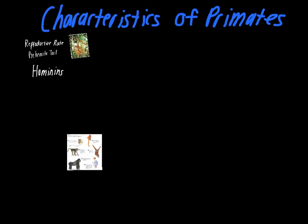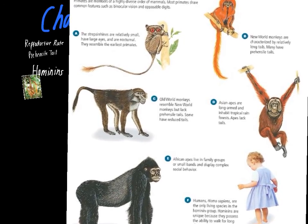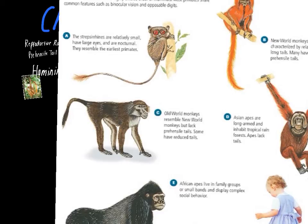Now let's look at some of the different primate groups, starting with the most basic ones that evolved the longest ago and working up to modern-day people. The strepsyrines are relatively small monkeys with really big eyes — they're generally nocturnal, which is why their eyes are so large. These resemble some of the earliest primates to ever evolve and are relatively simplistic, living only in certain parts of the world. The loris is a good example from this category.